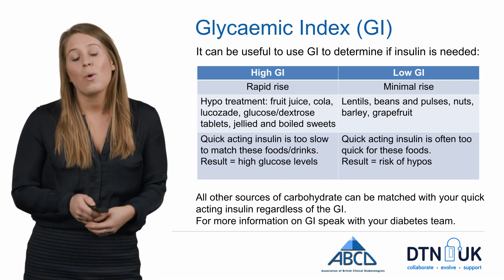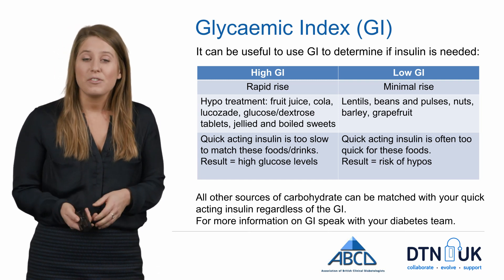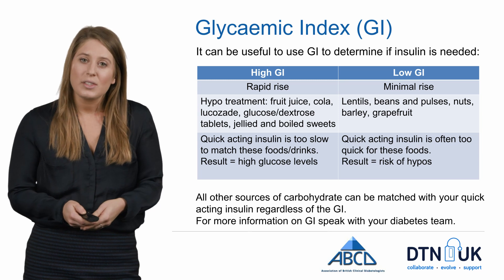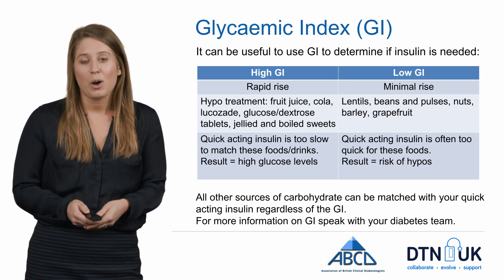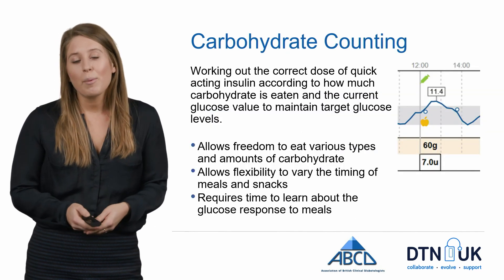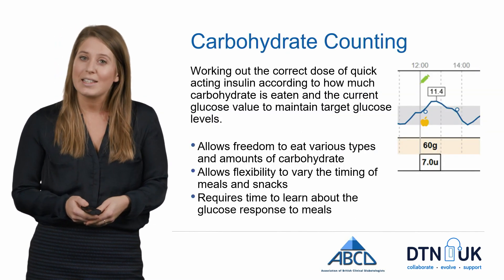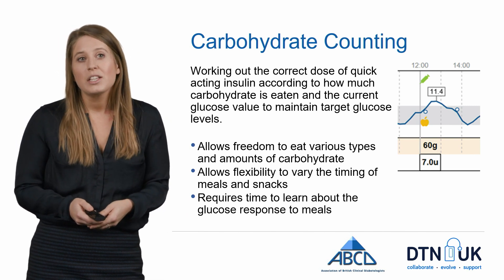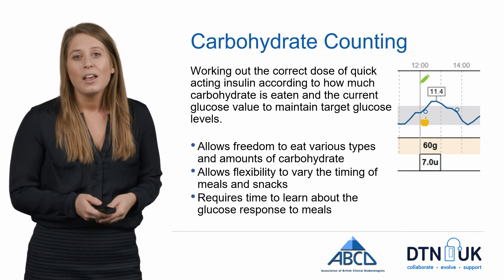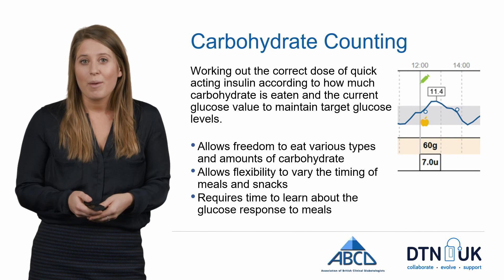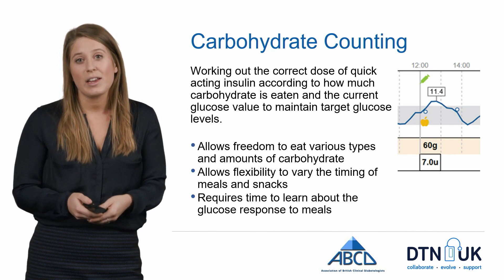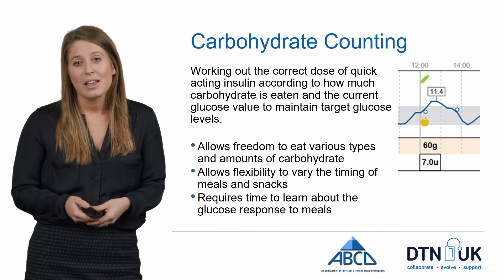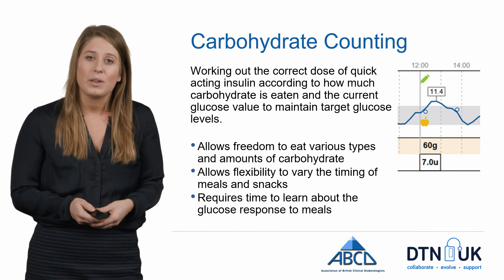Now we know about where carbohydrates come from in the diet and that different sources can have a different effect on glucose levels depending on glycemic index, let's look at how we can use that information to manage glucose levels through carbohydrate counting. Carbohydrate counting is working out the correct dose of quick-acting insulin according to how much carbohydrate you're eating and the current glucose value to maintain target glucose levels. It takes some time to learn and requires a bit of maths, but it leads to greater improvements in blood glucose control and allows freedom to choose what and when you want to eat.